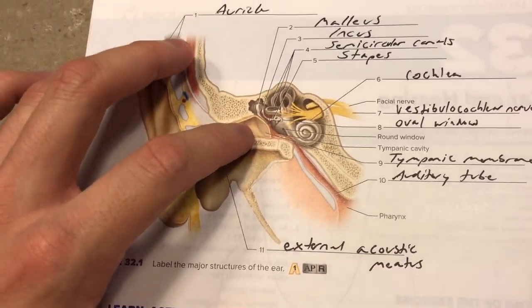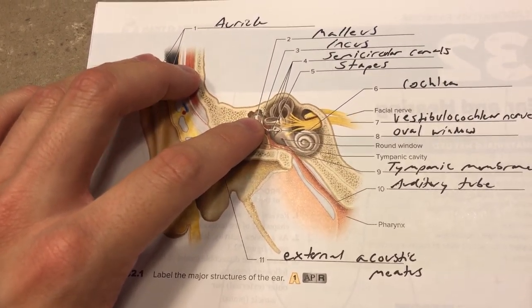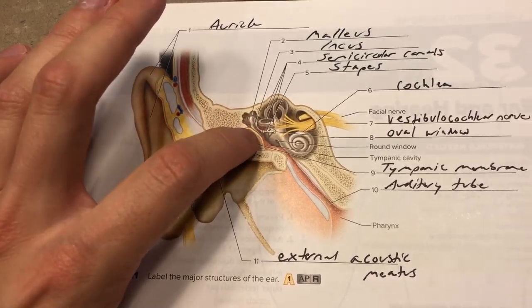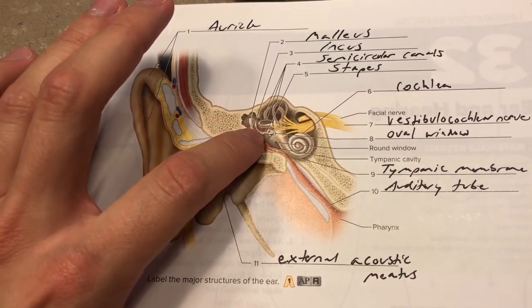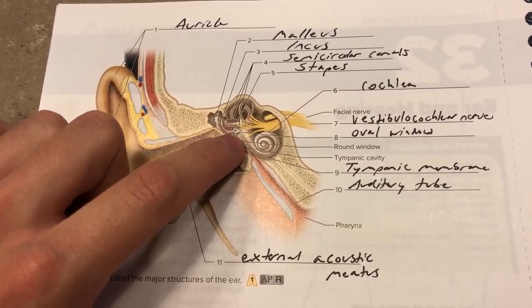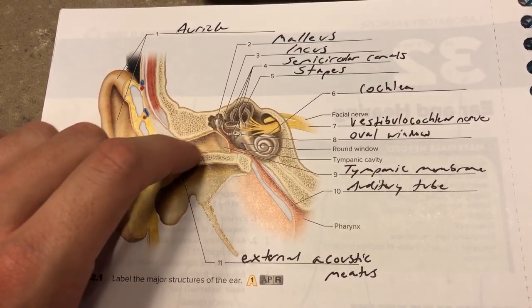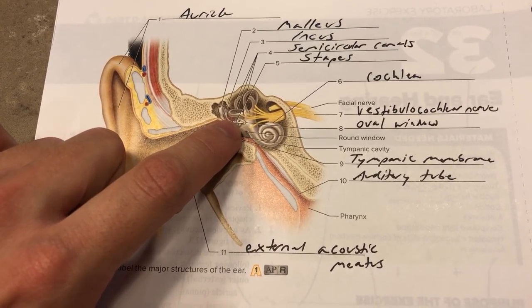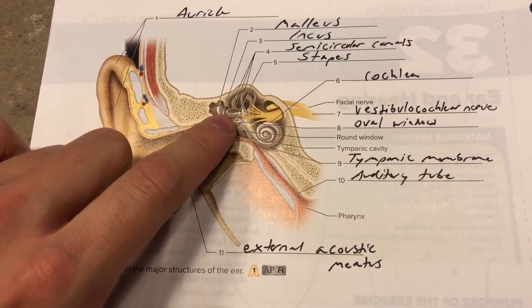So you have the external acoustic meatus which goes to the malleus and then into the incus and goes into the stapes, which does a vibrating sound into the oval window. This oval window transmits sound to the vestibulocochlear nerve.